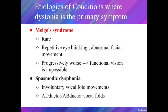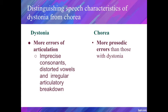Meige syndrome appears in early middle age and gets progressively worse, eventually causing the patient to lose functional vision. Spasmodic dysphonia is characterized by involuntary vocal fold movements during phonation. It is expressed as adductive vocal folds giving a strained and tight voice quality, or abductive vocal folds giving a breathy voice or aphonia. Dystonia has more errors of articulation — such as imprecise consonants, distorted vowels, and irregular articulatory breakdown — while chorea displays more prosodic errors than those with dystonia.